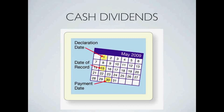The date of record is the date when anyone holding stock in the company will receive the dividend that was declared. In our example of May 2009, the date of record is the 15th. So if you buy or hold stock as of May the 15th, you will receive the dividend declared on May the 1st and participate in that dividend payment.